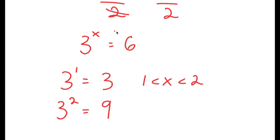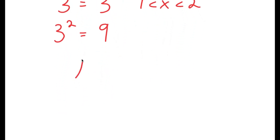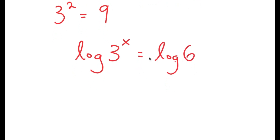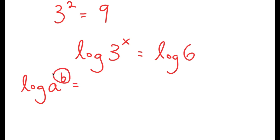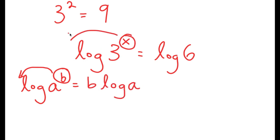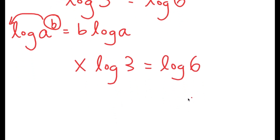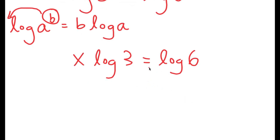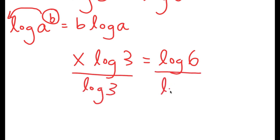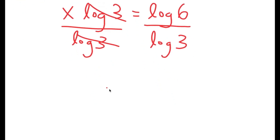So we want to find the exact value of x. I'm going to first start by taking the log on both sides. So I get log 3 to the power of x is equal to log 6. From here, if I have something in the form log a to the power of b, I can move this exponent b to the front, so this turns into b times log a. So I have log 3 to the power of x, and I can move x to the front. So I get x times log 3 is equal to log 6. Now I'm going to divide both sides by log 3, because we want to isolate x. So these two cancel out, and I get x is equal to log 6 over log 3.